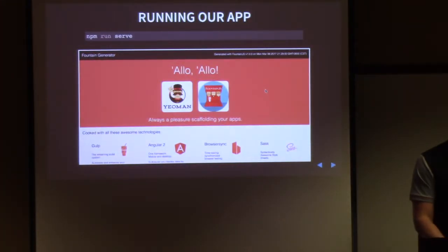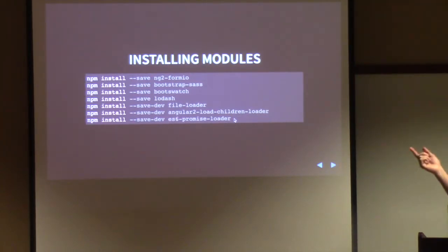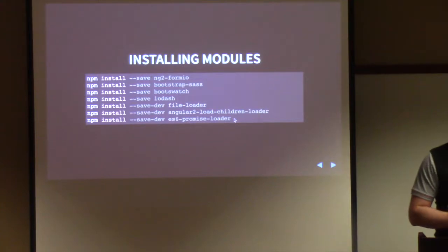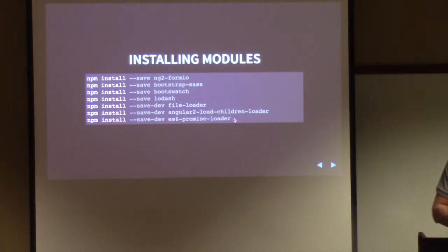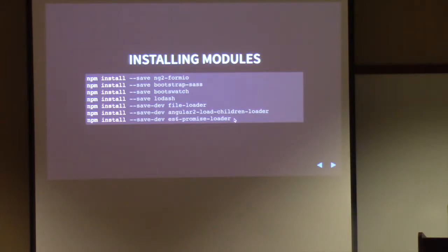Now that our application is running, we need to install some modules. The first is ng2-formio, which is the FormIO integration module providing form renderings. We'll also install Bootstrap Sass. Bootswatch allows us to change the theme. Lodash is a utility Swiss Army knife library. We'll also use file loaders — Webpack has loaders that tell it how to build when it encounters certain files like URLs or fonts. And the ES6 promise loader, because we're using ES6 and it needs to know how to load promises inline.